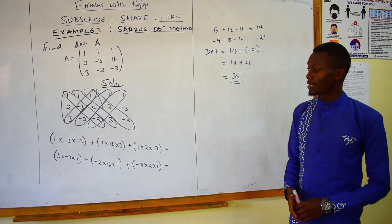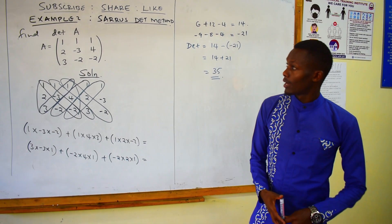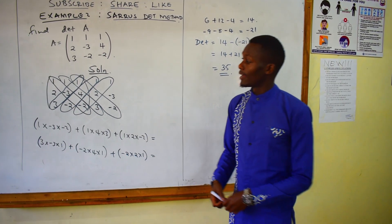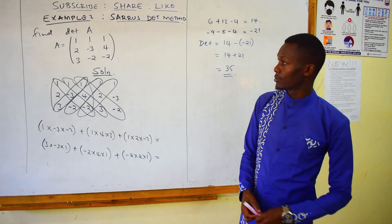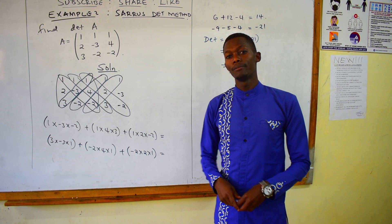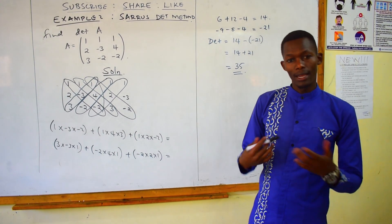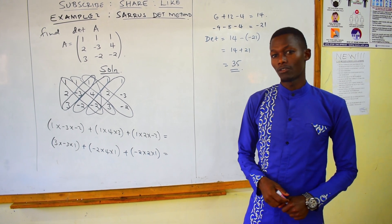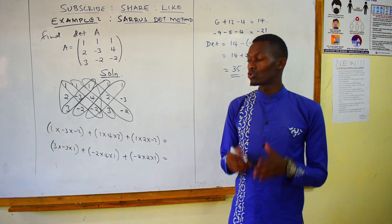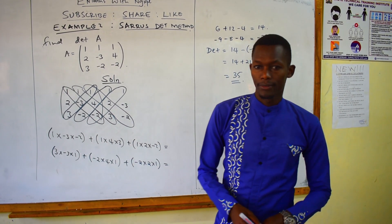That is how you get determinants using the Sarrus method. You can add this to the other methods you know — it will really help you when it comes to evaluating determinants. Remember to subscribe, share, comment, and like. Let's learn the concepts of mathematics together. See you in the next lesson as we check how to find the inverse of a 3 by 3 matrix. Thank you.